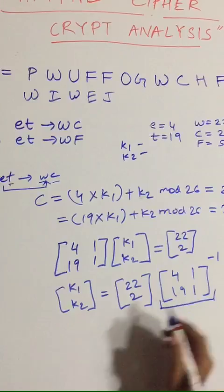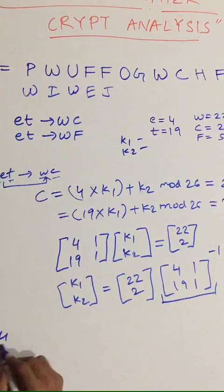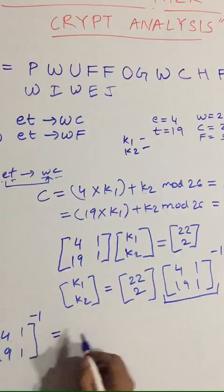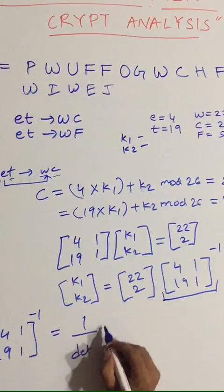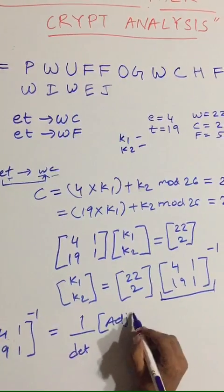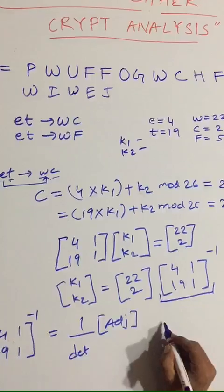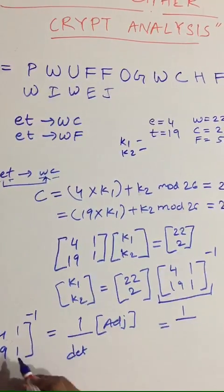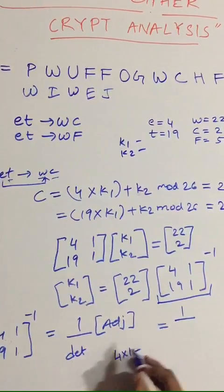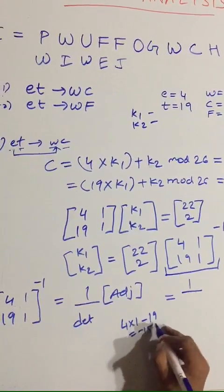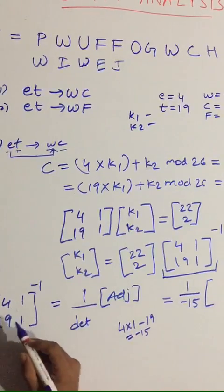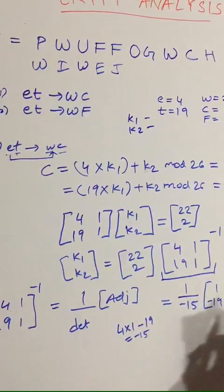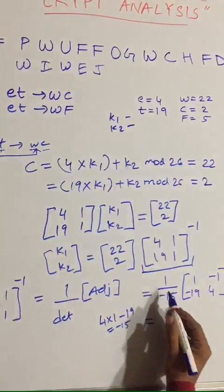To find the inverse of the matrix [4, 19; 1, 1], it equals 1 over the determinant times the adjoint. The adjoint is found by swapping the diagonal and adding a minus sign to the off-diagonal elements. The determinant equals 4·1 − 19·1 = −15. The adjoint is [1, −19; −1, 4].